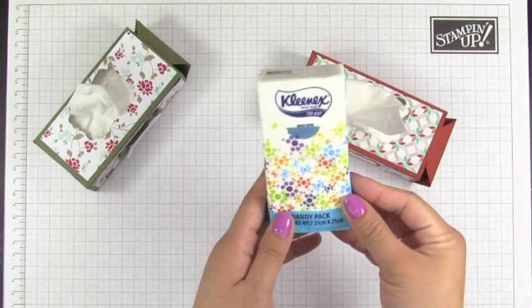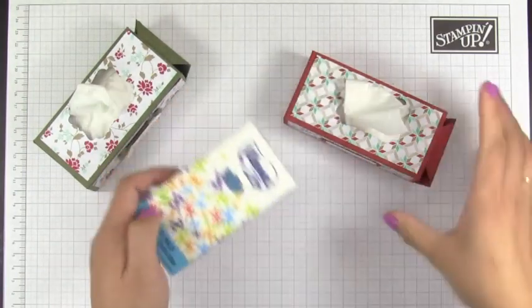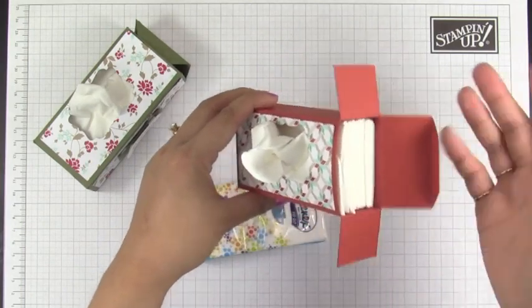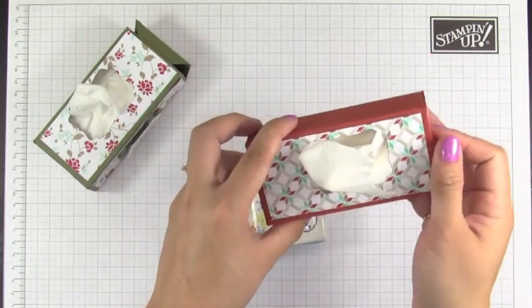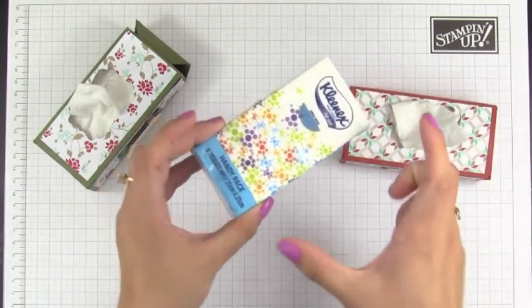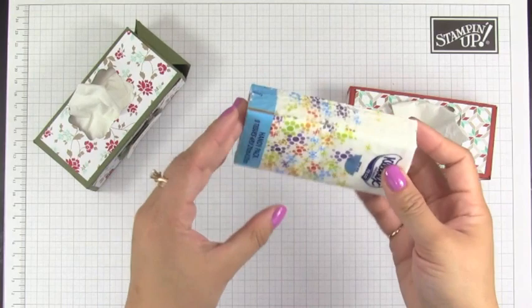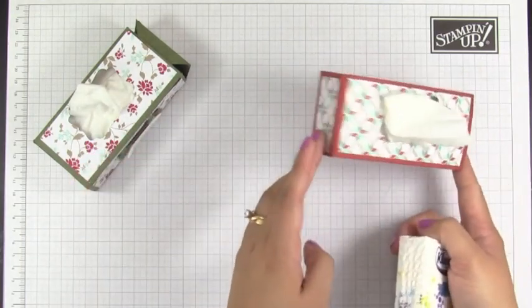The tissue that I use here is a handy pack Kleenex tissues and you open this on the side if you want to refill this, so you can recycle this over and over again. What I did is that I measured up the width and the length of this tissue and that's how I come up with the measurement of this.